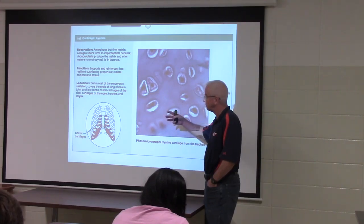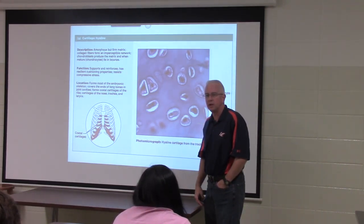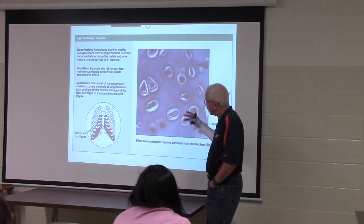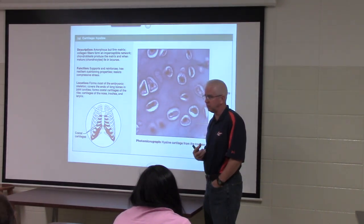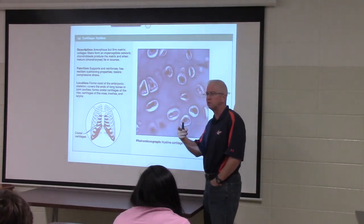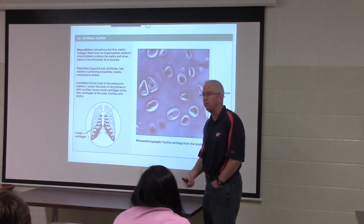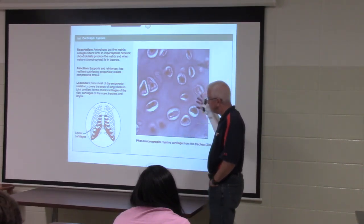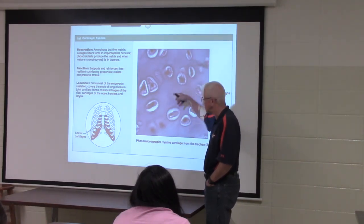As we learn endochondral ossification, at the end of the process, a long bone still has cartilage on its end. Cartilage in joints is not separate from bone - all ends of long bones have hyaline cartilage. This won't be surprising after learning endochondral ossification; it is the remnant of the embryonic form, which was originally hyaline cartilage.